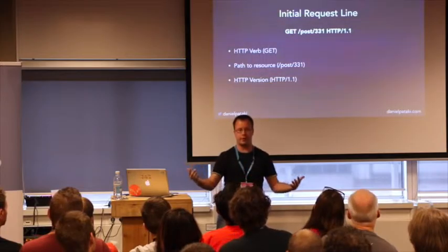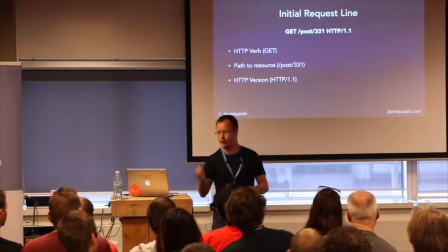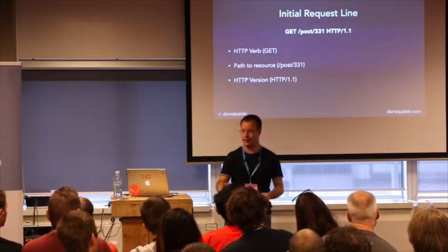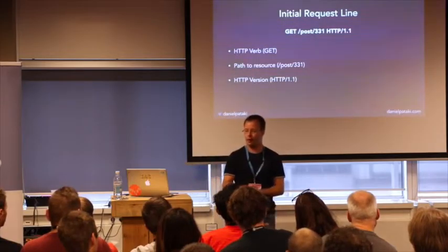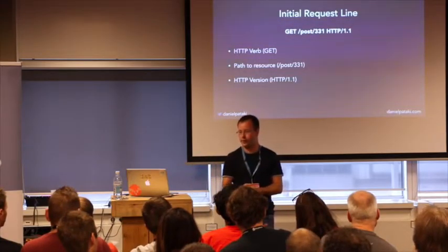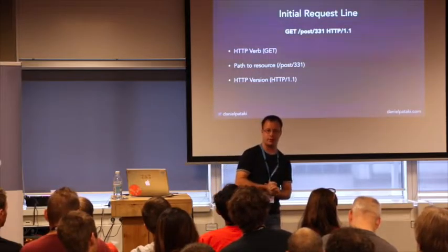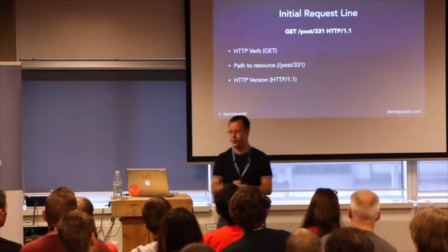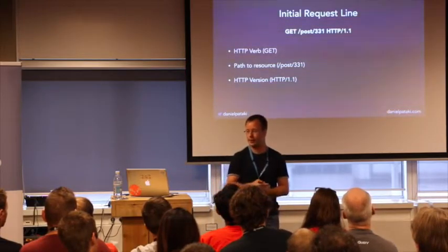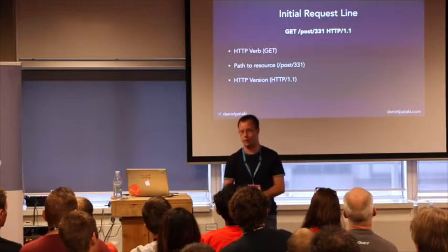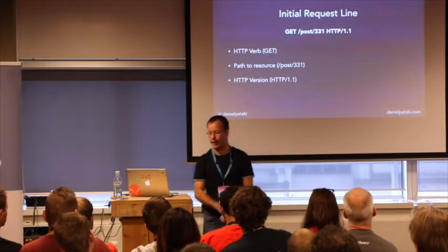When you send a request, you're sending three bits of data. First, an HTTP verb, which defines what type of action you want to take on the resource. Second, the path to the resource — something like /post/331, which would be the post with the ID of 331. And the last part is the HTTP version, which is usually 1.0 or 1.1. The main part is that you're sending an HTTP verb and a path.